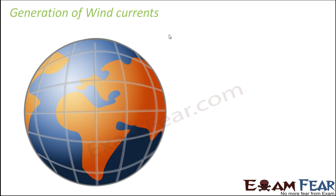When you look at the entire earth, there are certain regions we are going to talk about. This central line at the middle of the earth is called the equator, and these two extreme sides are called the poles — north pole and south pole. When we talk about wind currents, we are talking about the movement of air, and this movement is controlled to a large extent by the sun.